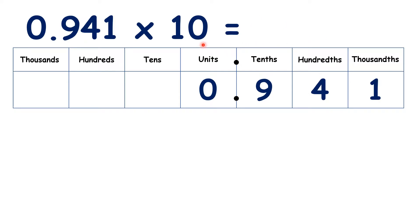What is 0.941 times 10? We move the digits across, ignore this 0, and we have 9.41.